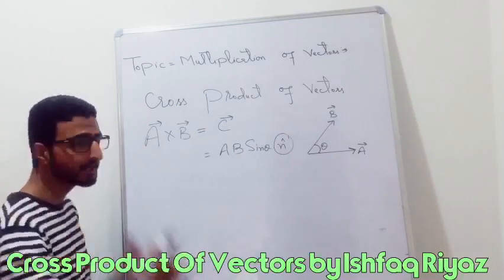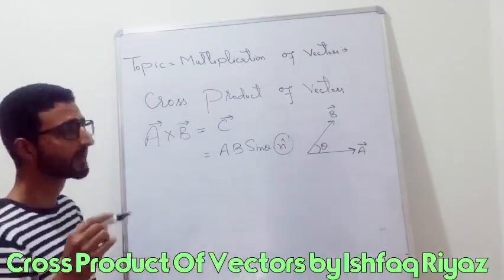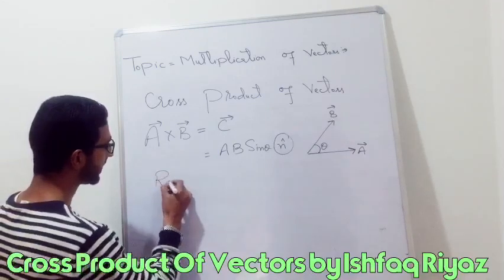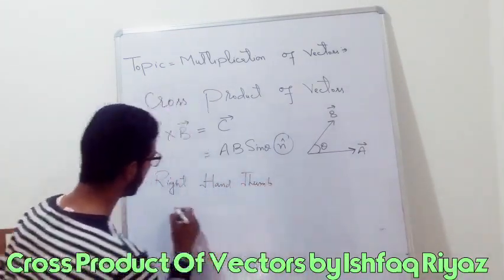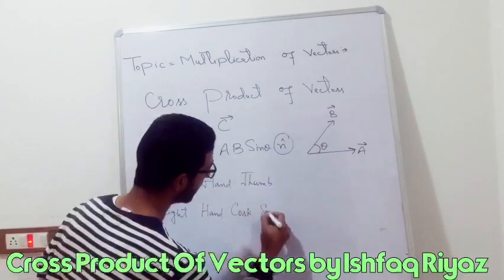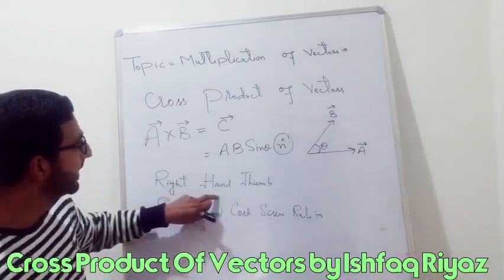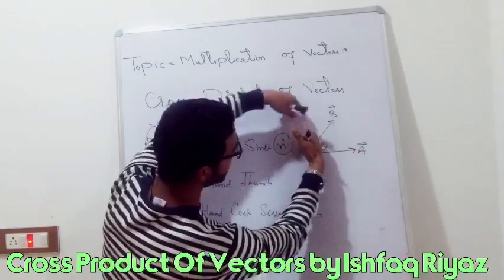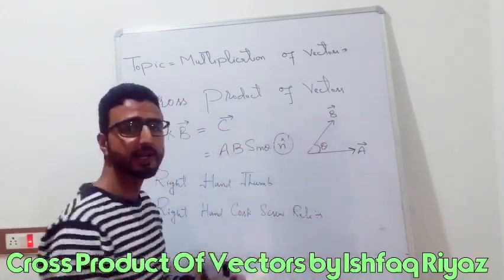Since I can draw two vectors perpendicular to this plane — one pointing upwards and another pointing downwards — to give the direction of n̂ in a cross b, we have two rules: number one, the right-hand thumb rule, and number two, the right-hand cork screw rule. To give the direction of a cross b, if you curl your fingers of the right hand in the direction of a cross b, the erected thumb will give you the direction of n̂, that is the direction of a cross b.